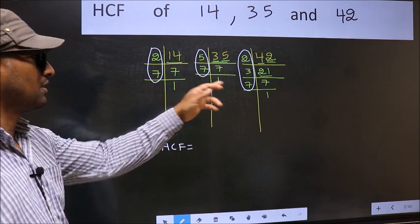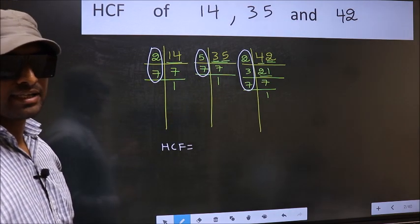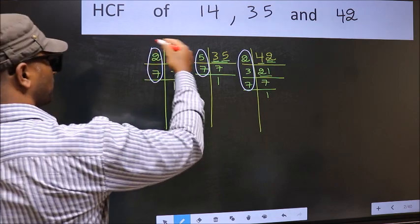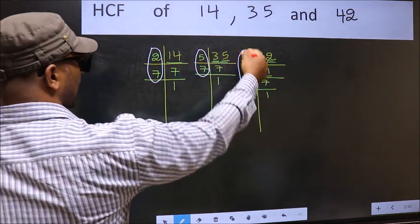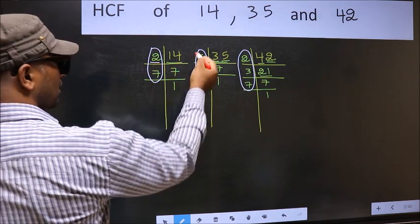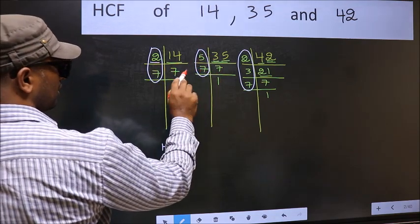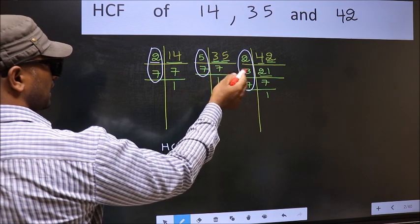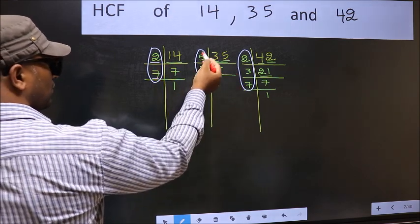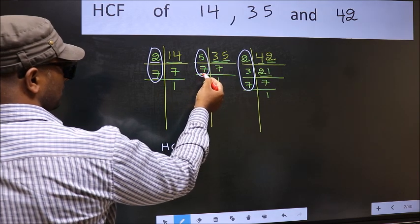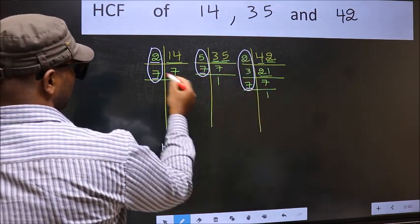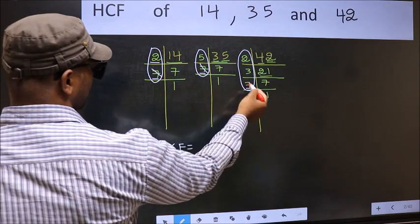So now let us find the numbers which are present here and here and also here. Starting with the number 2. Do we have 2 here? No. So no need for us to check in the other place. Next number 7. Do we have 7 here? Yes. Go to the next place. Do we have 7 here? Yes. So cut 7 right here.